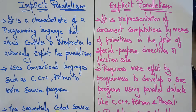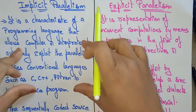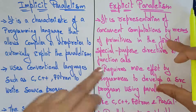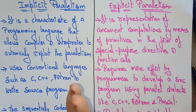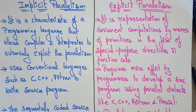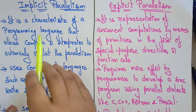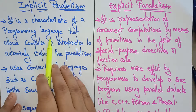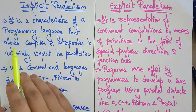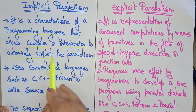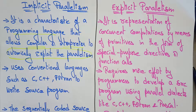Implicit parallelism — the name itself says everything will be done inside. You are not supposed to do anything. Implicit parallelism is a characteristic of a programming language that allows a compiler or interpreter to automatically exploit parallelism. So it is automatically doing the parallelism; you are not supposed to do anything.